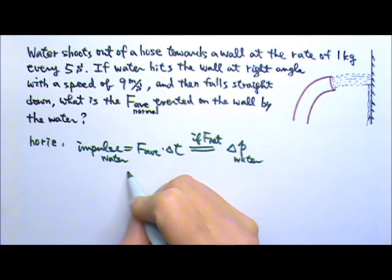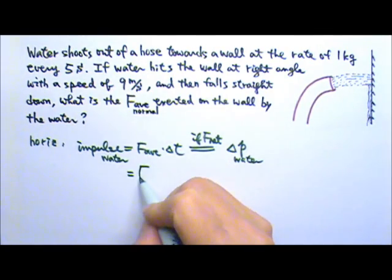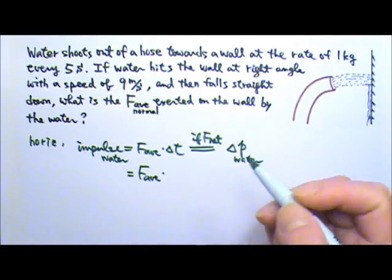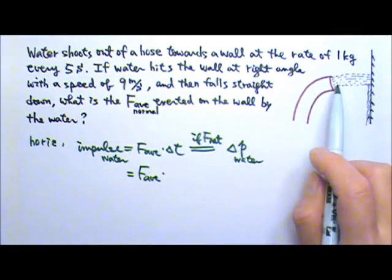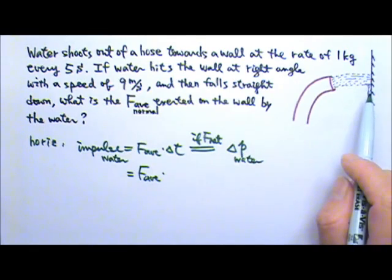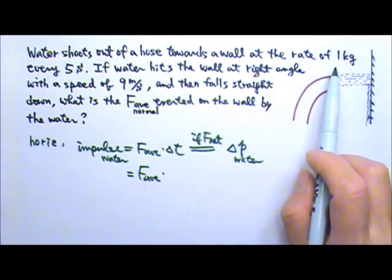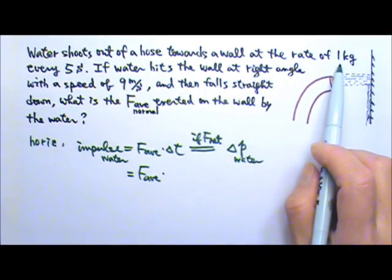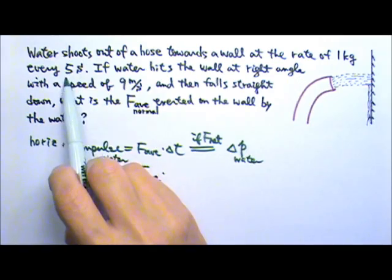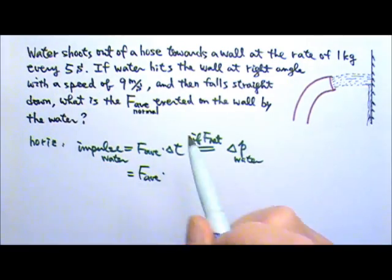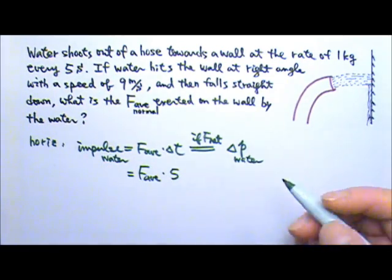So let's see. We don't know the average force we're looking for. And the time, this is an ongoing event, so we don't know for how long the event is going to last. But because it tells us that the water comes out at the rate of 1 kg every 5 seconds, it can be convenient for us to look at 5 seconds.